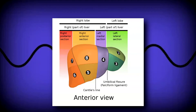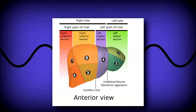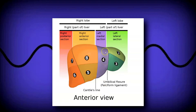Hello everybody, Henry here. Today we're going to go over the liver segmental anatomy, also called Couinaud anatomy. Normally sonographers divide the liver into left and right lobe using the falciform ligament. But with Couinaud anatomy, the segmental anatomy is divided into eight functional units, each with its own vascular and biliary supply.